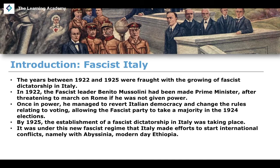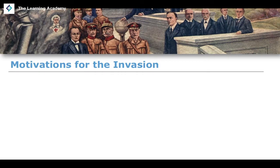Under this new fascist regime, Italy started to make efforts when it came to international conflicts. They wanted to start a conflict essentially with Abyssinia — modern-day Ethiopia. There are a few reasons why Italy wanted to invade Abyssinia and take that territory, which you might wonder about given it was a relatively unheard-of area of geography.